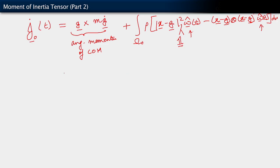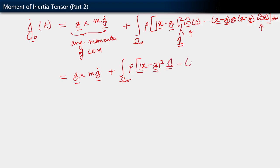What this lets me do is write out our right-hand side as the angular momentum of the center of mass, plus an integral over omega_t dV of ρ times (|x minus g|² times the isotropic tensor minus the tensor product of (x minus g) with itself), all acting on the vector ω̂. Since ω̂ is a function of time alone, I can pull it out of the integral.